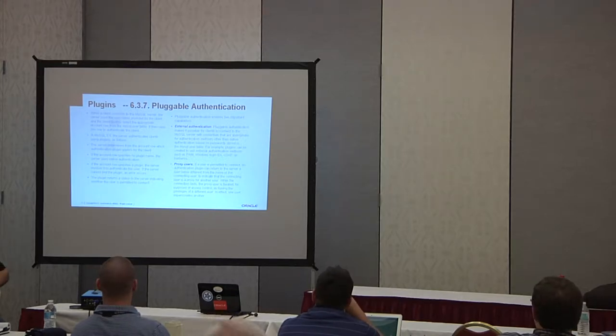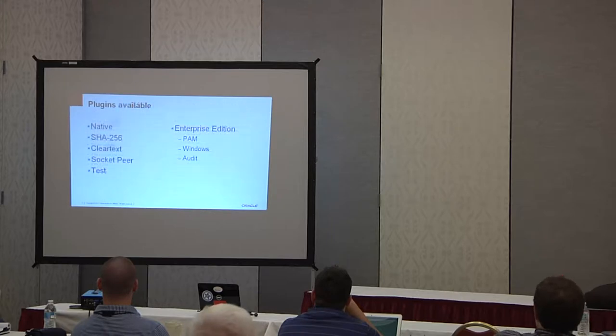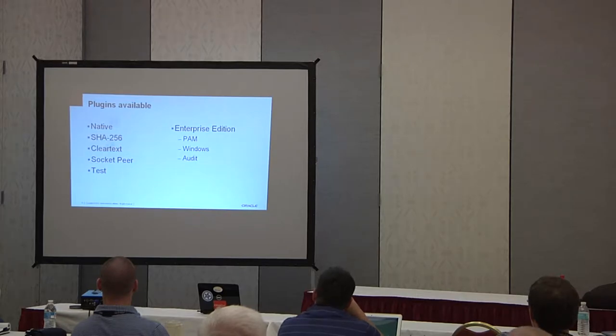We also introduced with 5.6 proxy users. It used to be you got a new user who had to use the database, you had to have a new account form. If you have an accounting department and they're always hiring and firing folks, it's easier to set up one general accounting record that has all the privileges the accounting folks need and then you just give a proxy login for the new temp accountant. What sort of plug-ins do we have? On the right-hand side, we have the native plug-in which everyone's been using for a long time, 256 SHA, clear text, a socket peer, and a test.